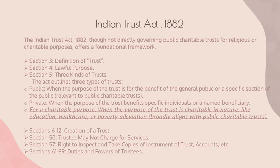Section 57 grants beneficiaries the right to inspect and obtain copies of the instrument of trust, accounts, and other relevant documents, promoting transparency and accountability in trust operation. Furthermore, Sections 61 to 89 outline the duties and powers of trustees, including the obligation to act impartially, prudently invest trust property, and maintain proper accounts. These duties ensure responsible stewardship of trust assets, vital for the effective functioning and fulfillment of charitable objectives of public charitable trusts.